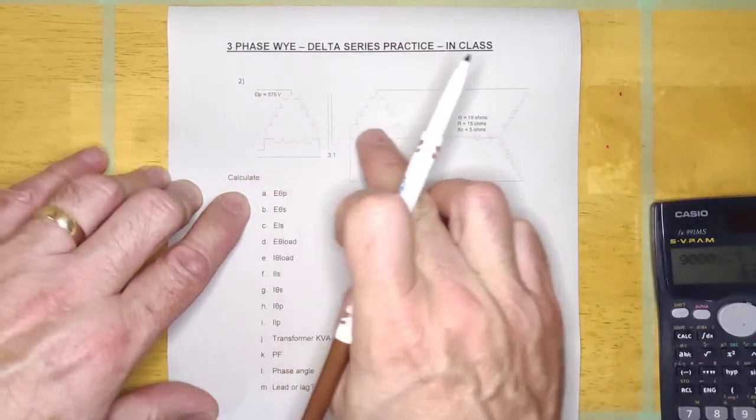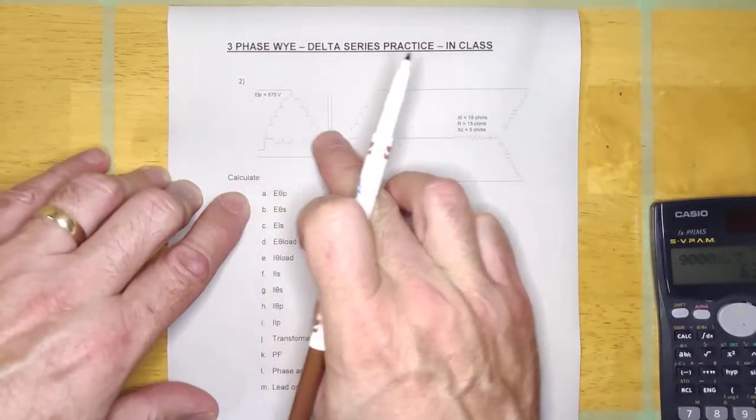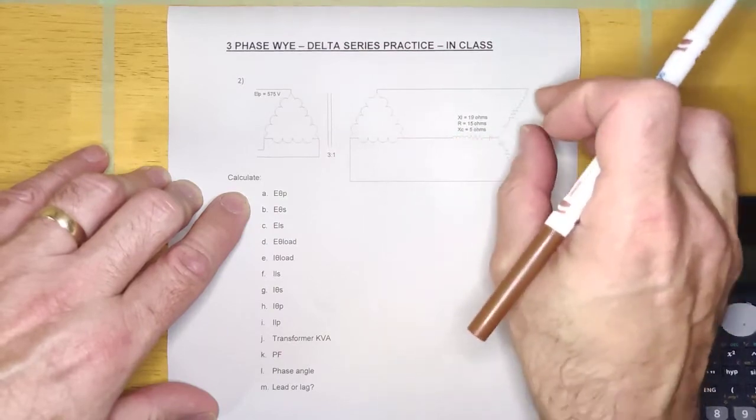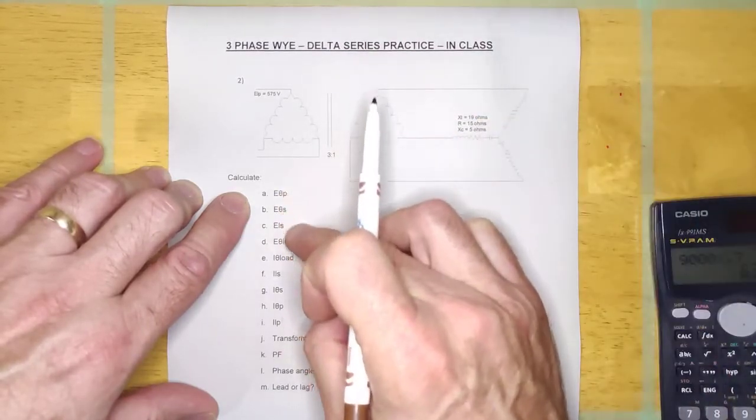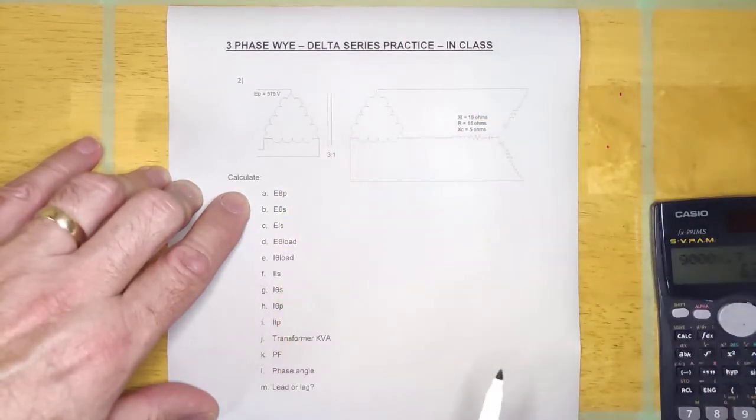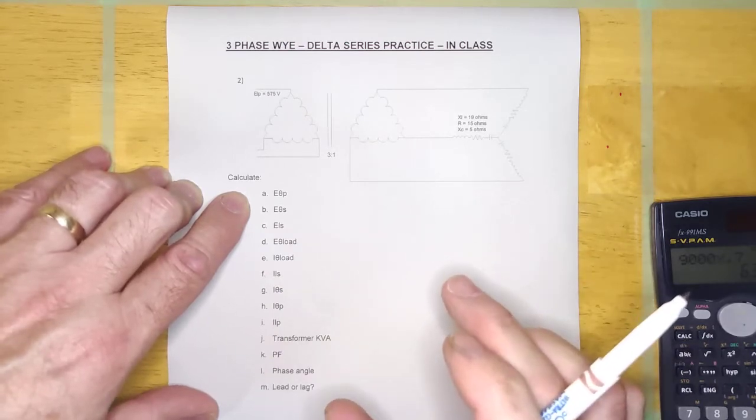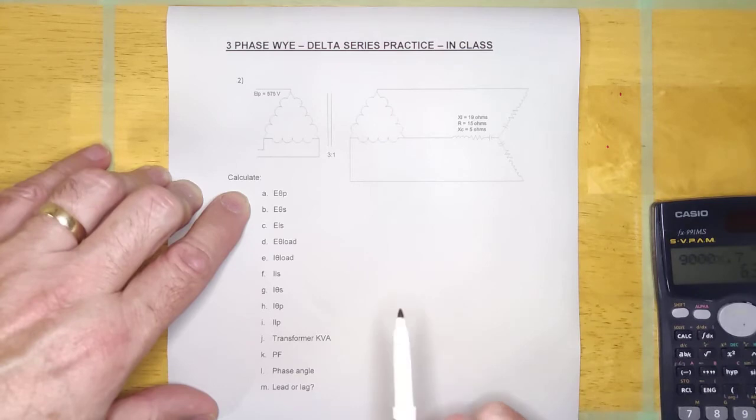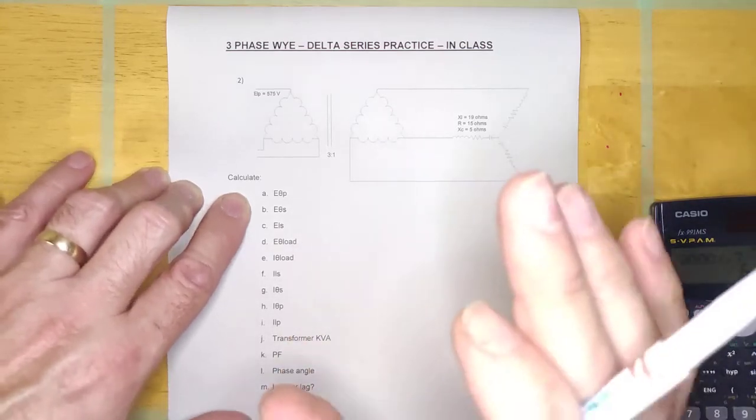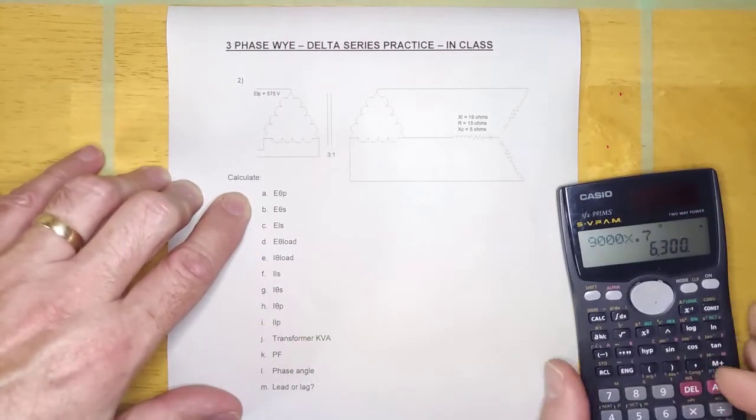We're not going to worry about the load again. We're just going to take our voltage and move it across the circuit until we get E phase load. And we're going to stop at E phase load. I want you to pause the video here and come back once you've calculated E phase load. So go ahead and pause it. I'm going to work it out quietly.